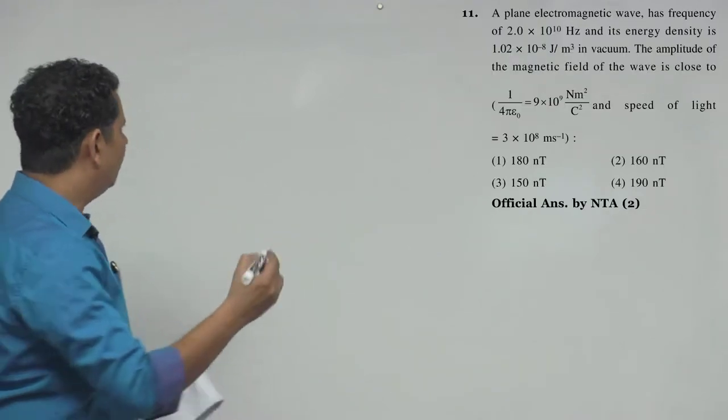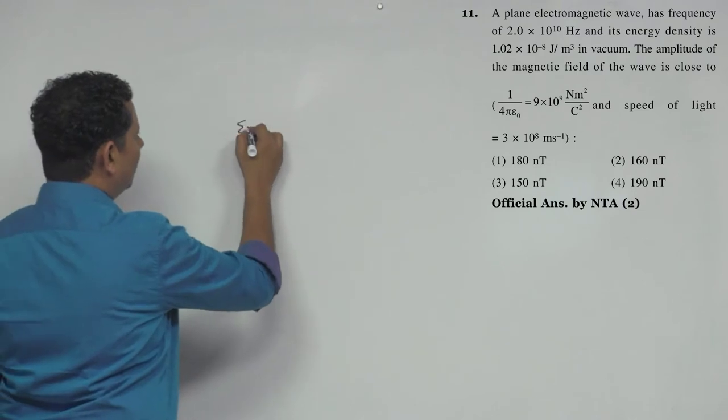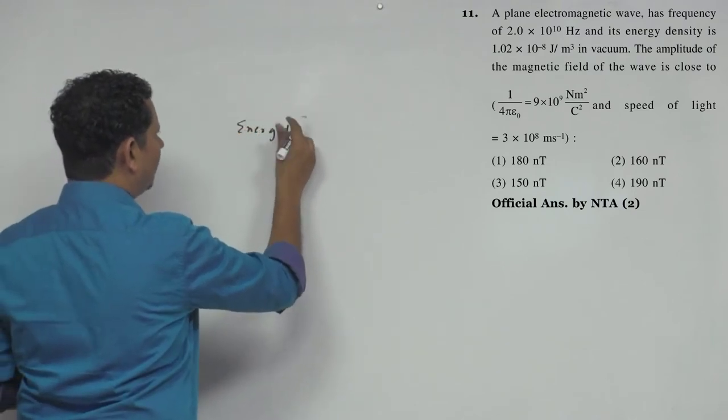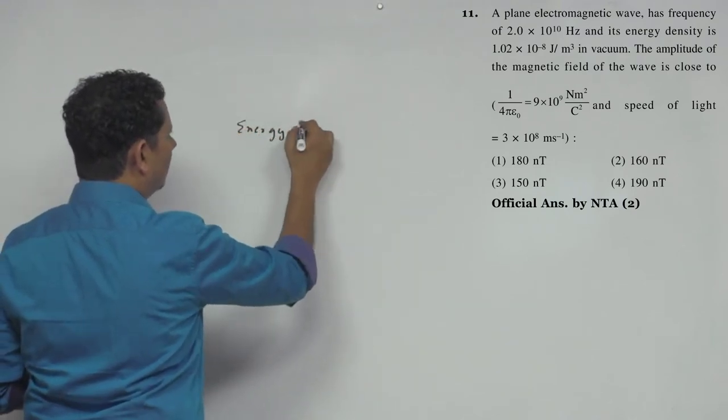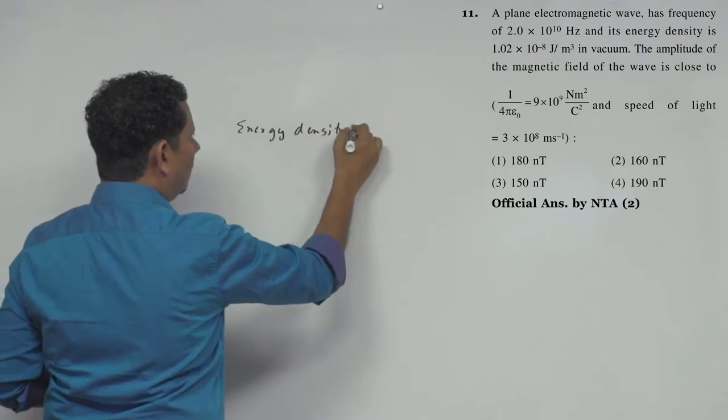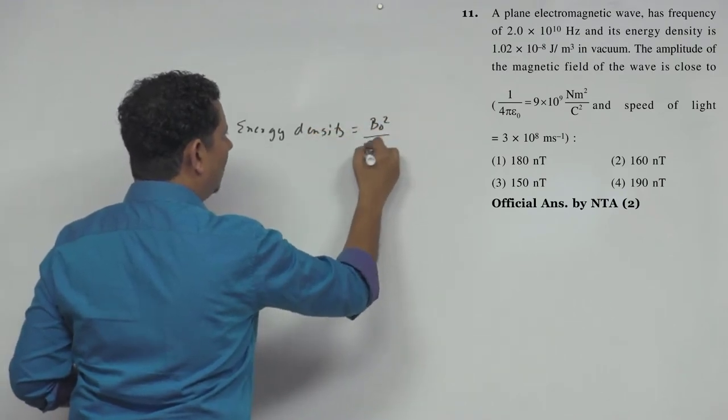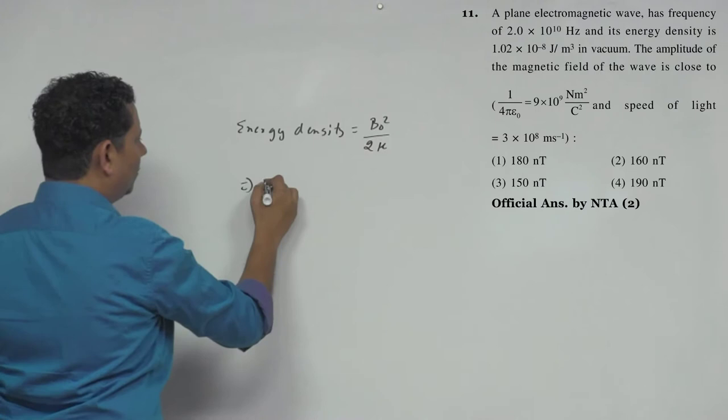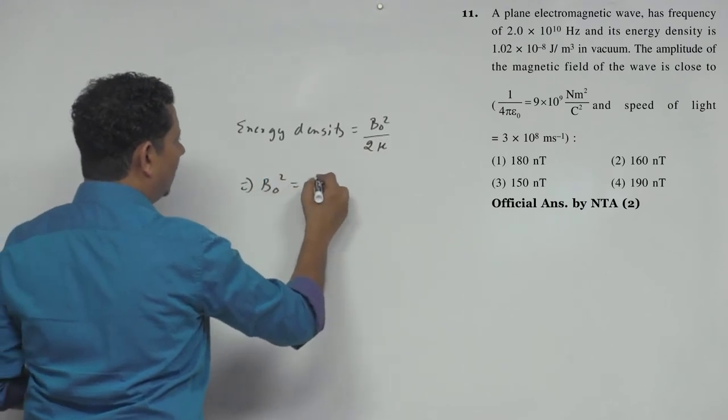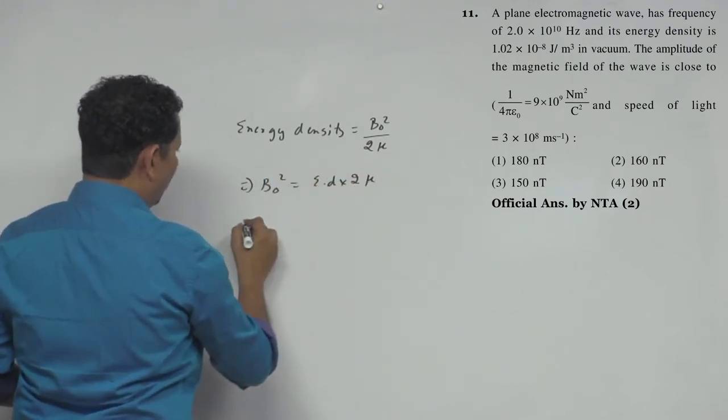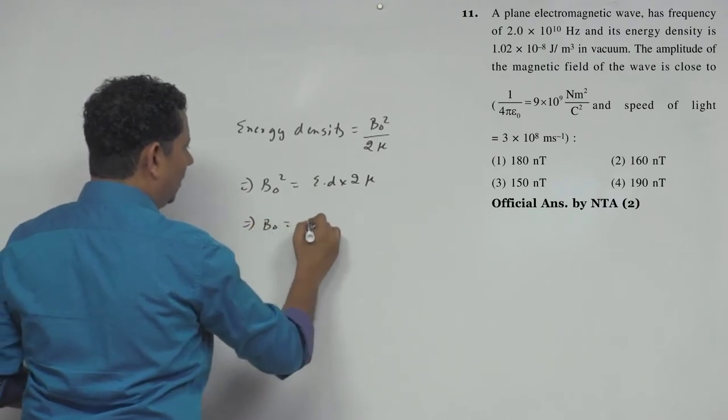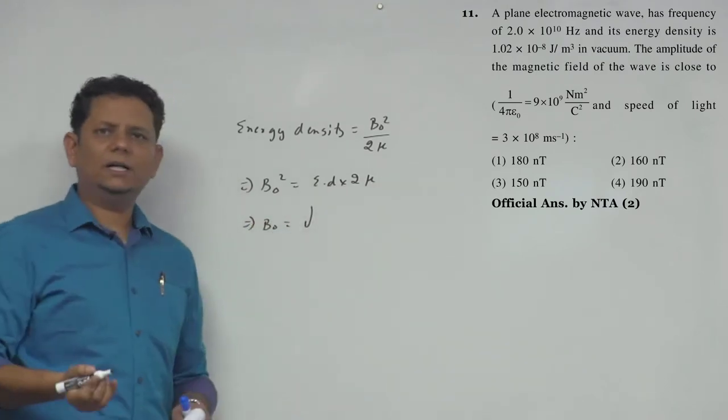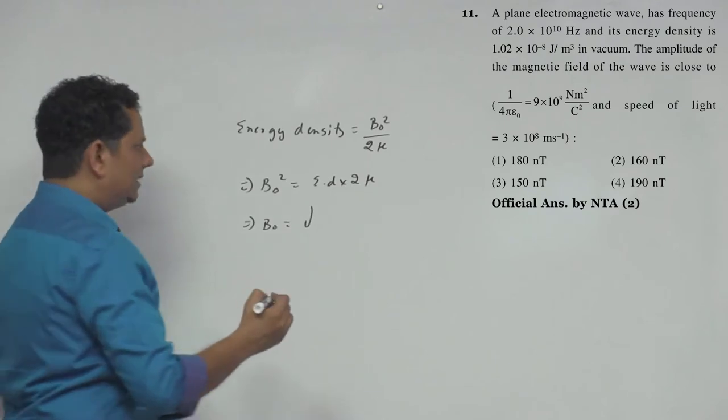B0. Now, when we talk about energy density, that will be equal to B0 squared divided by 2 mu, which implies B0 squared equals 2 mu times energy density, which implies B0 equals under root of energy density multiplied by 2 mu.